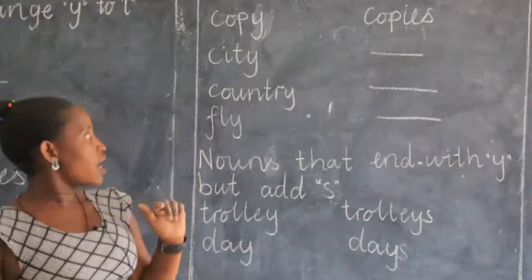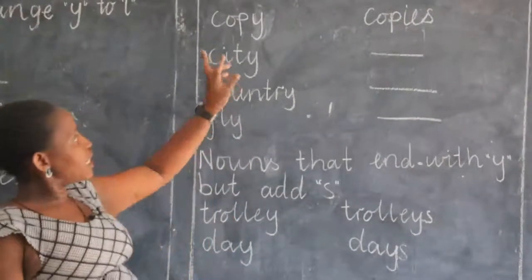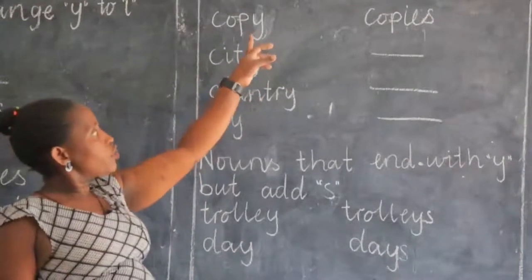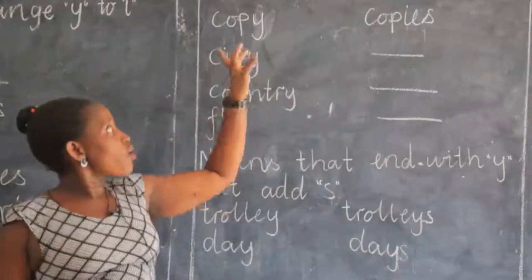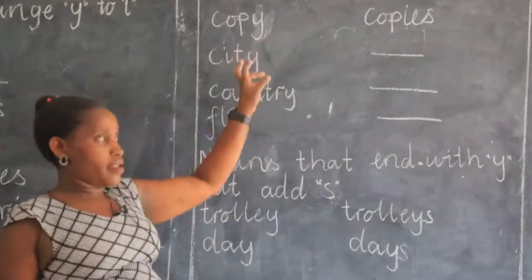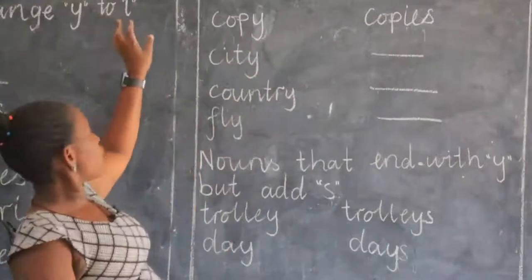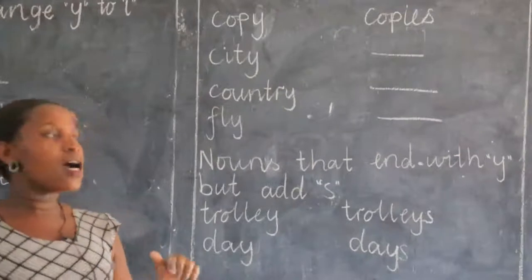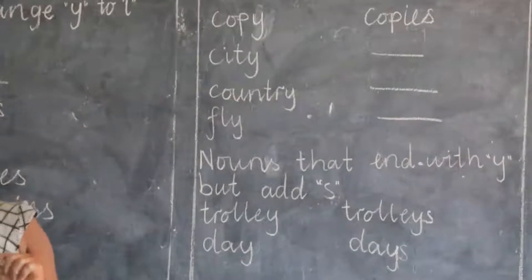But what guides us to drop Y? Whenever you find a noun that ends with Y, but Y is preceded by — that is, Y comes after a consonant — there we drop Y. That is what guides us to change Y to I. Y coming after a consonant letter: we change Y to I and then add ES in the plural.